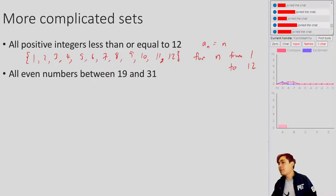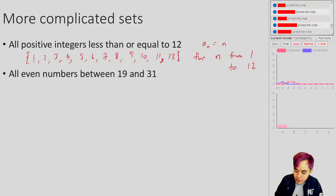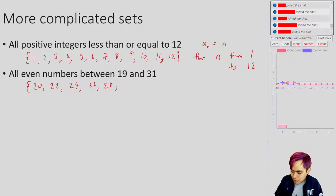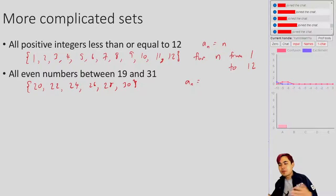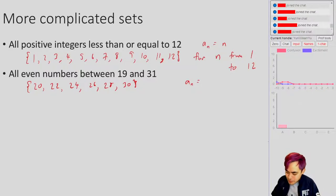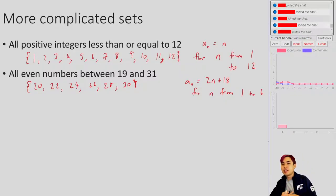Or things like all even numbers between 19 and 31. That looks like: 20, 22, 24, 26, 28, and 30. Again, this is a finite set because you don't have an infinite number of them. Writing down the formula is a little bit more complicated, but you can still write one down. You'll notice that if you have 2n plus 18, for n from 1 to 6, that gives you all of those numbers in that set.